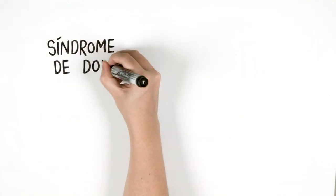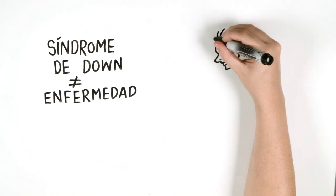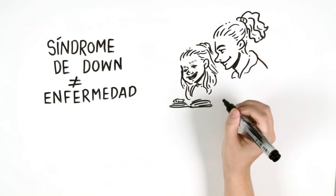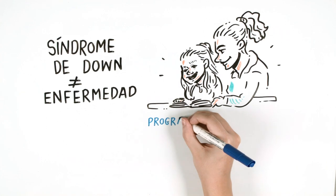The Down syndrome is not a disease. There is no treatment. There are further diseases associated with the syndrome. Early care programs for children are also very important.